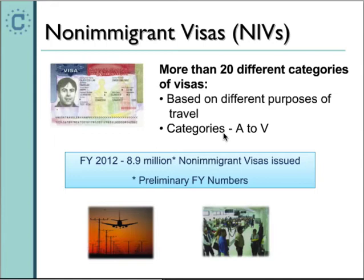In fiscal year 2012, we issued almost 9 million non-immigrant visas worldwide across categories A through V. But today we're focusing on O's and P's specifically. You can find more information about different types of non-immigrant visas on our website at travel.state.gov.